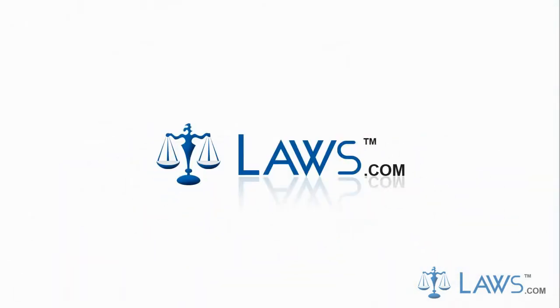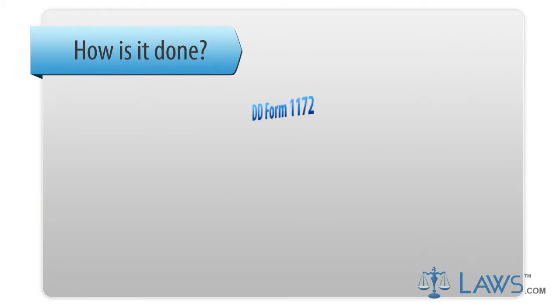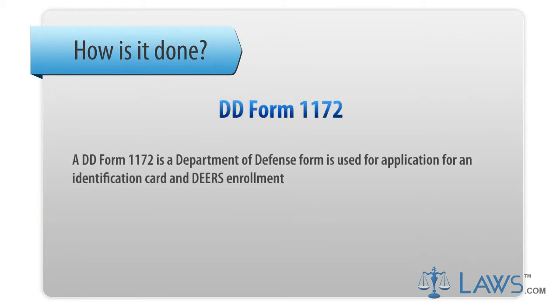Laws.com Legal Forms Guide. A DD Form 1172 is a Department of Defense form used for an application for an identification card and DEERS enrollment.